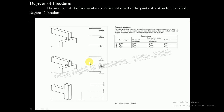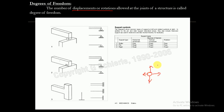The next topic is degrees of freedom. The number of displacements or rotations allowed at the joint of a structure is called degrees of freedom. For a roller support, you can move in one direction, so the degree of freedom is 1.